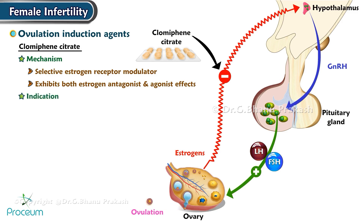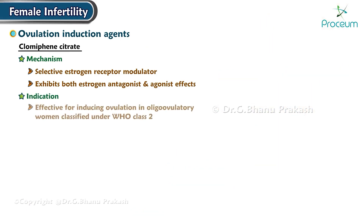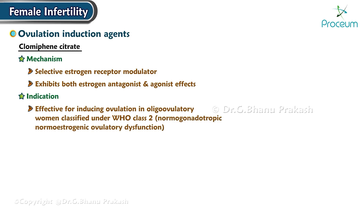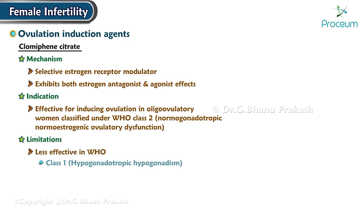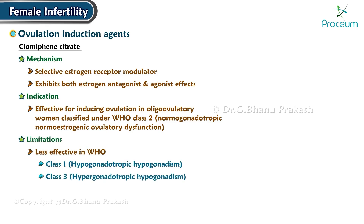Indication: Clomiphene citrate is particularly effective for inducing ovulation in oligo-ovulatory women classified under World Health Organization Class II — normogonadotropic, normoestrogenic ovulatory dysfunction. Limitations: Clomiphene citrate is less effective in World Health Organization Class I, or hypogonadotropic hypogonadism, and Class III, hypergonadotropic hypogonadism, patients, due to their different underlying causes of infertility.